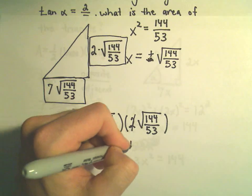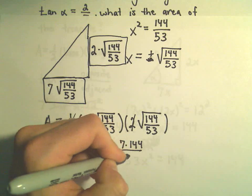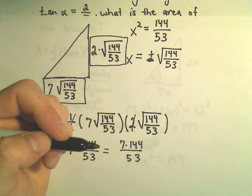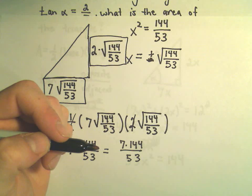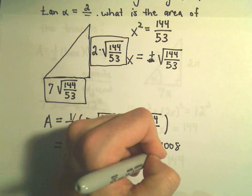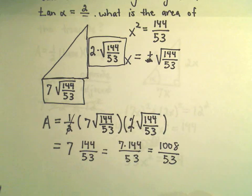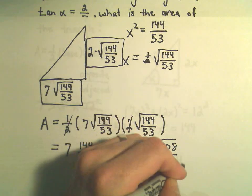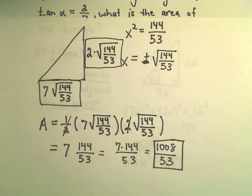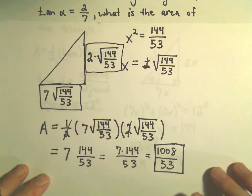So, we could write this as 7 times 144 over 53. So, let's see, 7 times 144. I'm getting 1008 over 53. So, we would say that the area of that triangle is 1008 divided by 53 square units, whatever the units are. So, that's all there is to it.